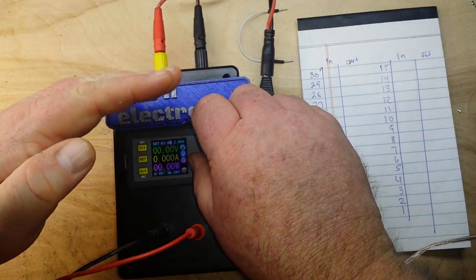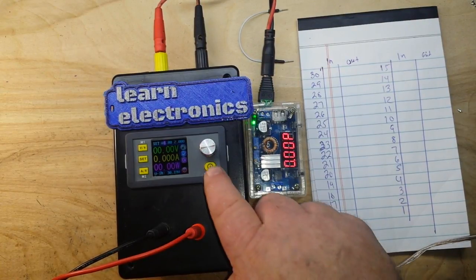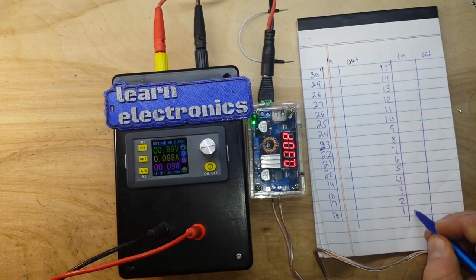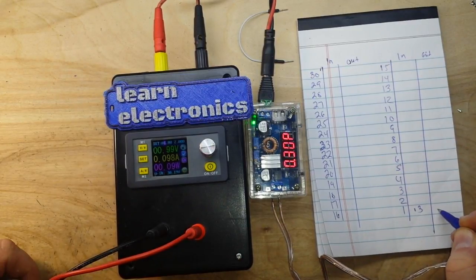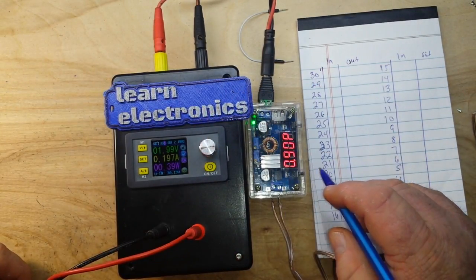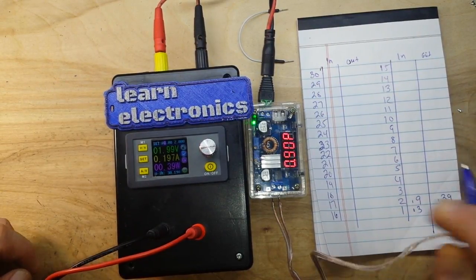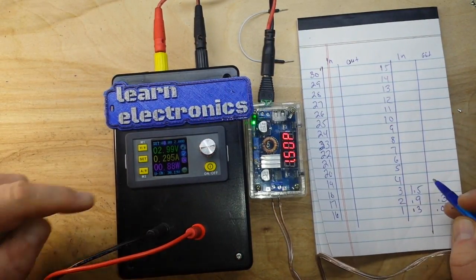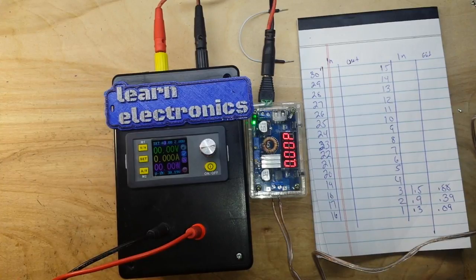We turn it on, our power in is 0.3 watts, our power out is 0.09. Then we take it up to 2 volts, our power in goes up to 0.9, our power out 0.39. Up to 3 volts, power in becomes 1.5, out becomes 0.88. You get the idea. I'm not going to make you watch me do 30 of these, but I am going to do 30 of these. Then I'll be back and we'll talk about it.